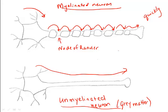While there's a sacrifice in speed, there's the potential for a tremendous number of interconnections. To get a sense of the difference in relative speed, impulses travel along myelinated neurons at a speed of about 200 meters per second, while they only travel along unmyelinated neurons at a speed of about 1 meter per second.